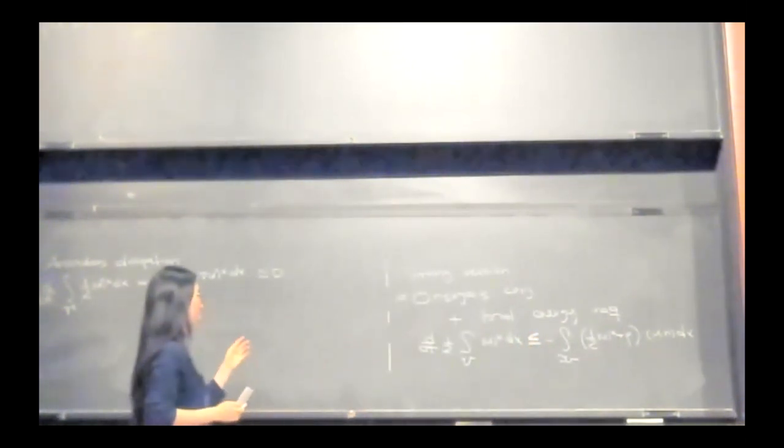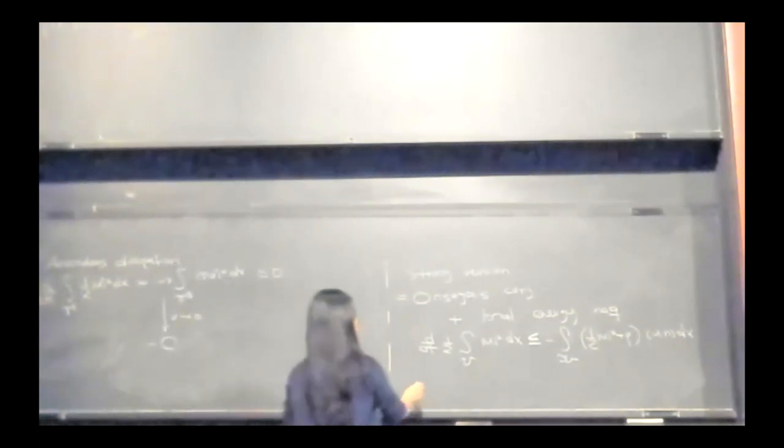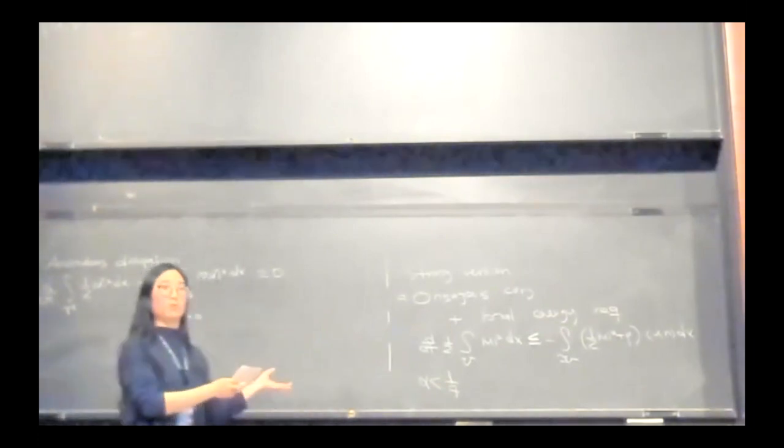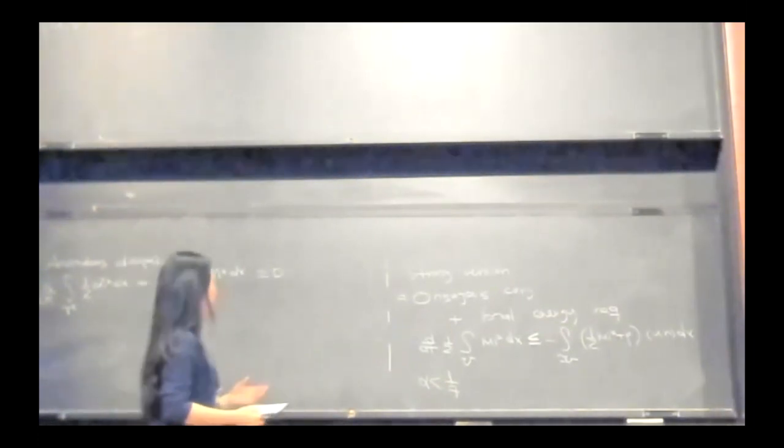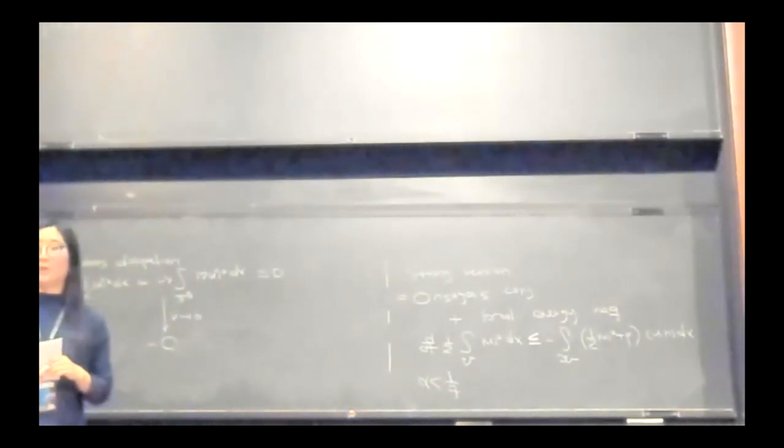So the negative direction of the stronger version of the Onsager conjecture was recently proved in a joint work. We don't need to improve it to one third. Thank you very much for your attention.